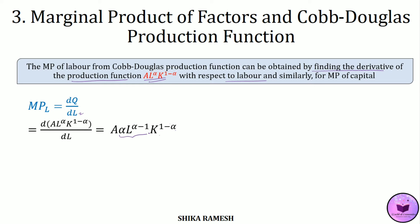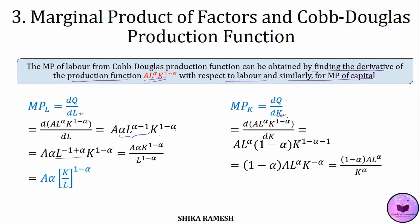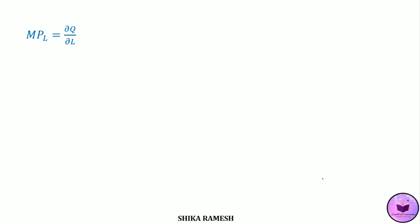Solving this, we get A·α·L^(−1+α) K^(1−α). Bringing L^(−1+α) back to the denominator gives A·α·K^(1−α) / L^(1−α), which can be written as A·α·(K/L)^(1−α). Similarly, the marginal product of capital is found by differentiating with respect to K, giving MPK = (1−α)·A·(L/K)^α.